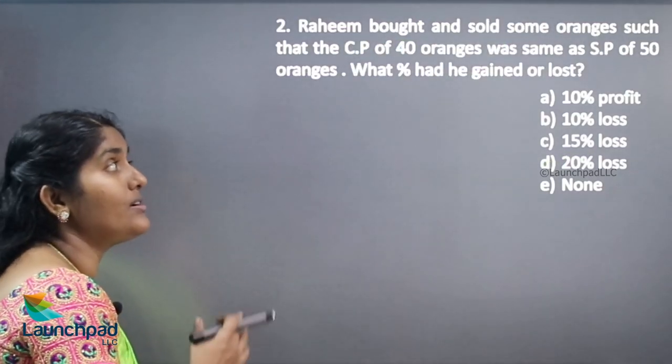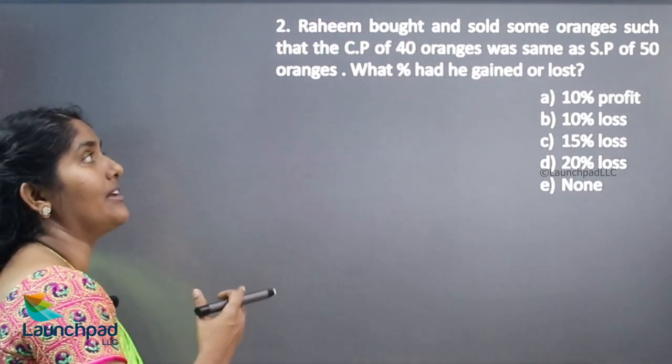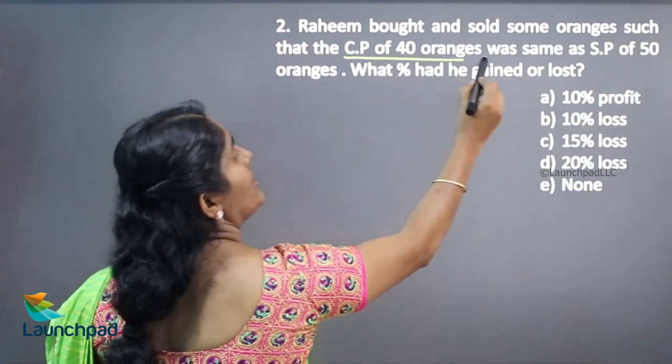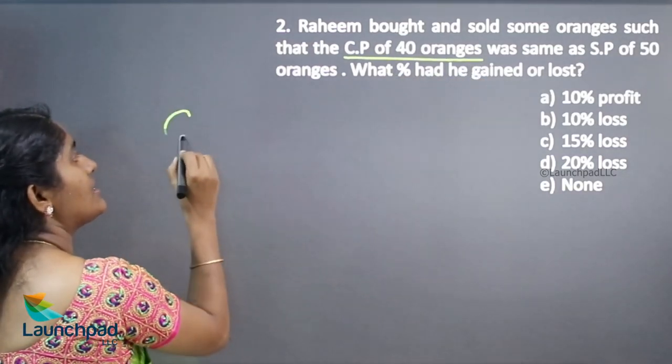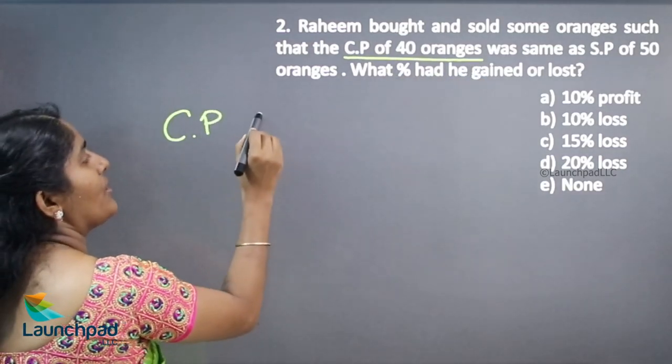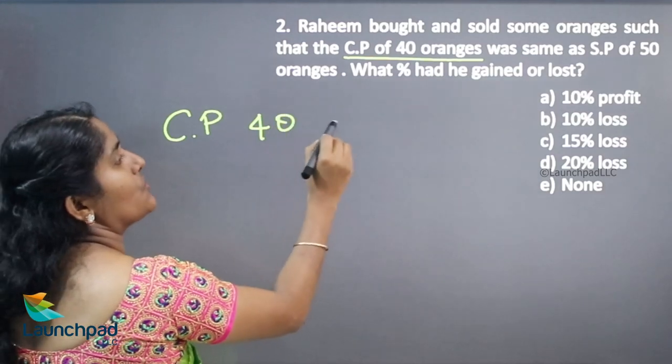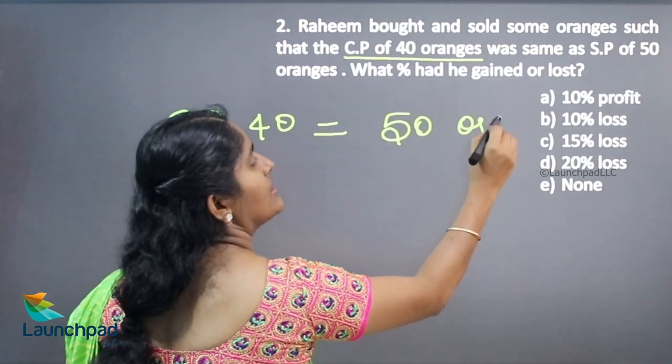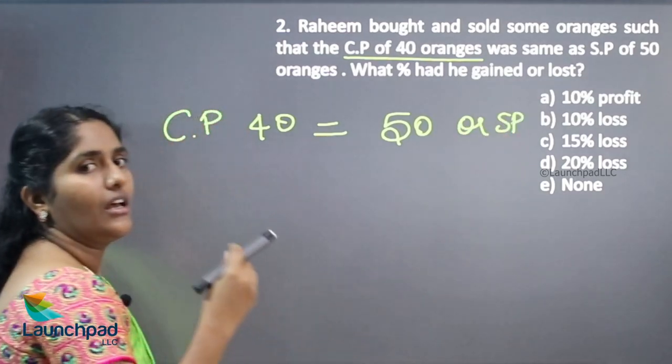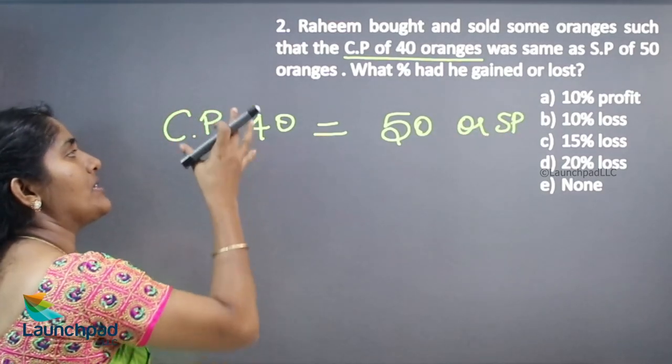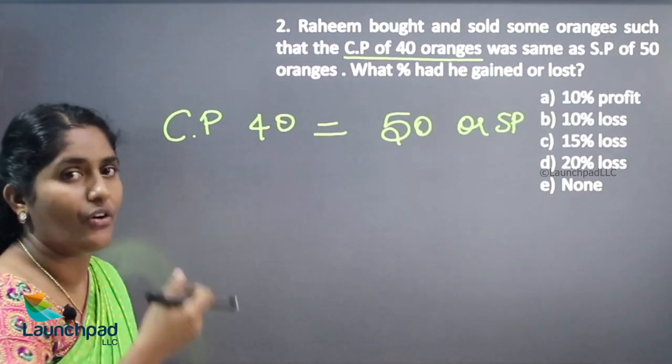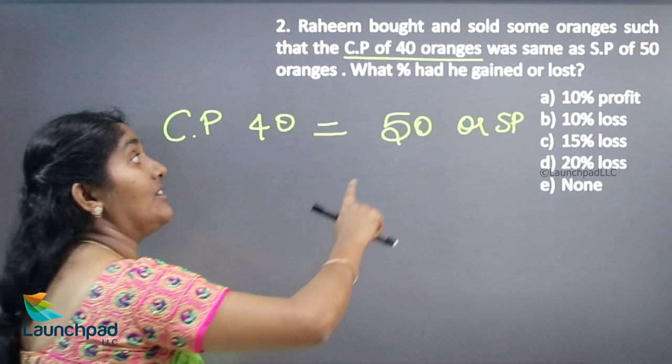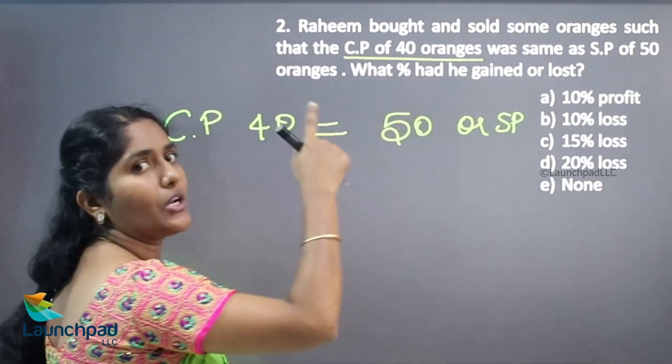Raheem bought and sold some oranges such that the cost price of 40 oranges was same as selling price of 50 oranges. So if you are spending 1000 rupees or 2000 rupees for buying 40 oranges, that 2000 rupees you are getting while selling 50 number of oranges.